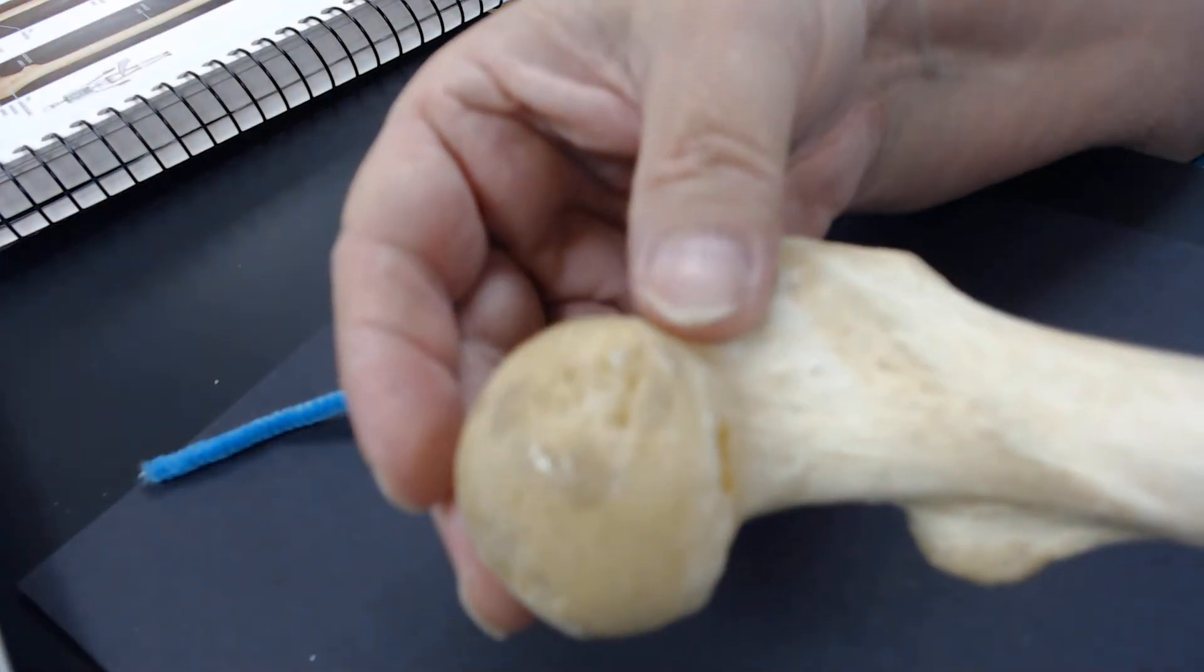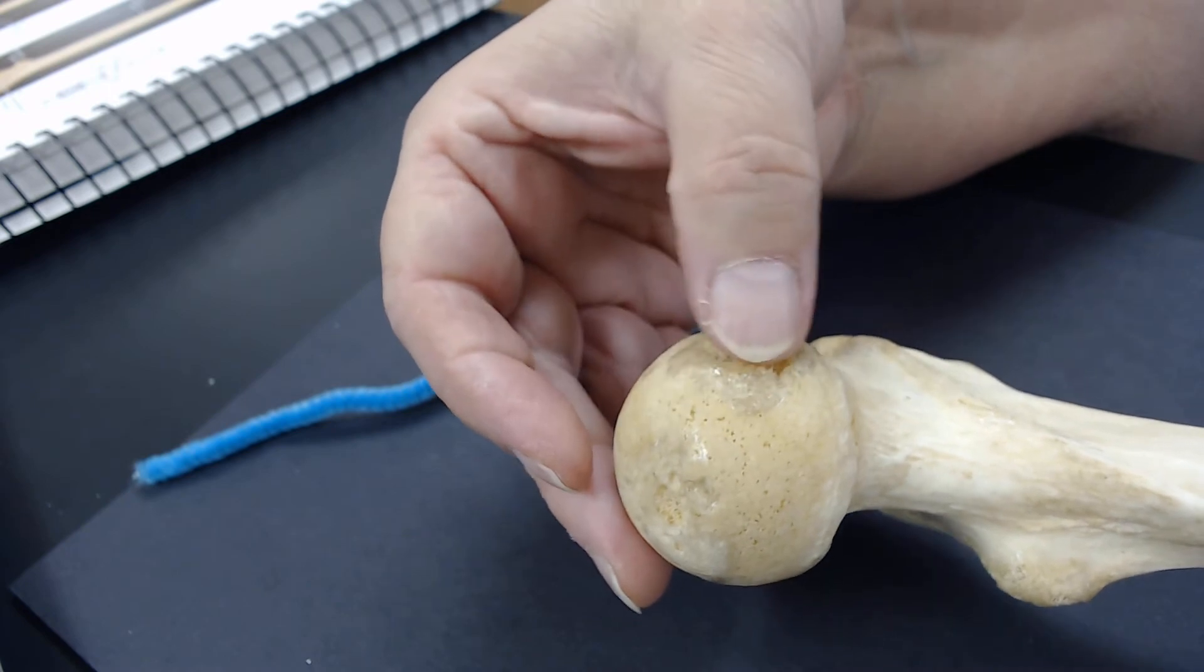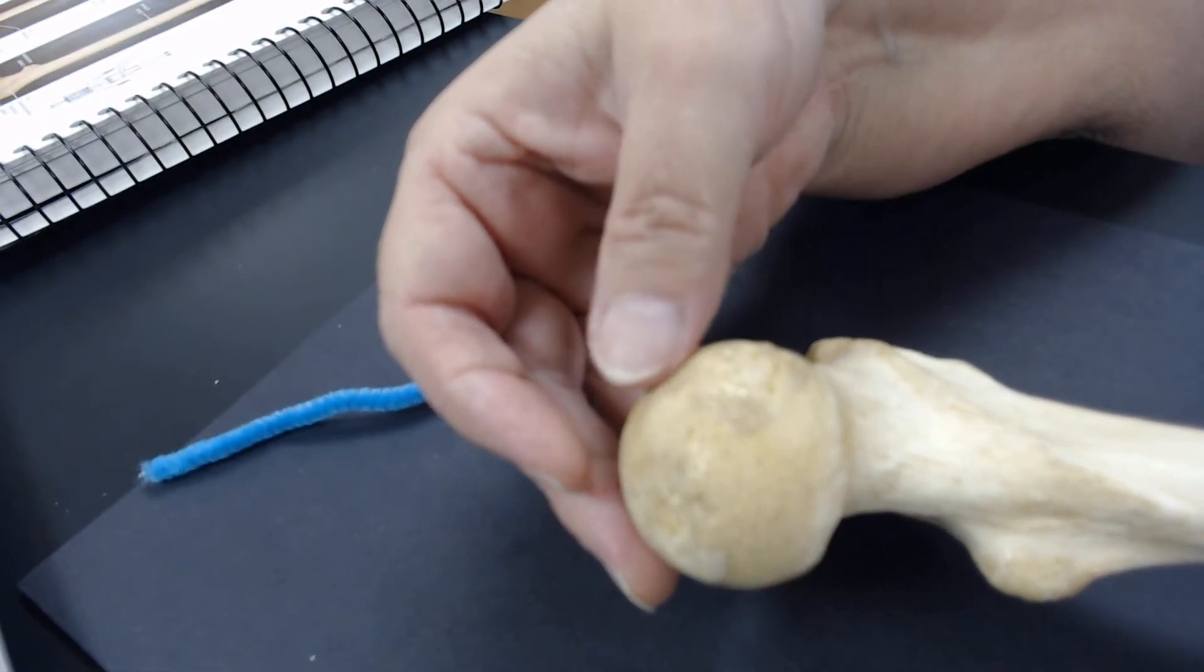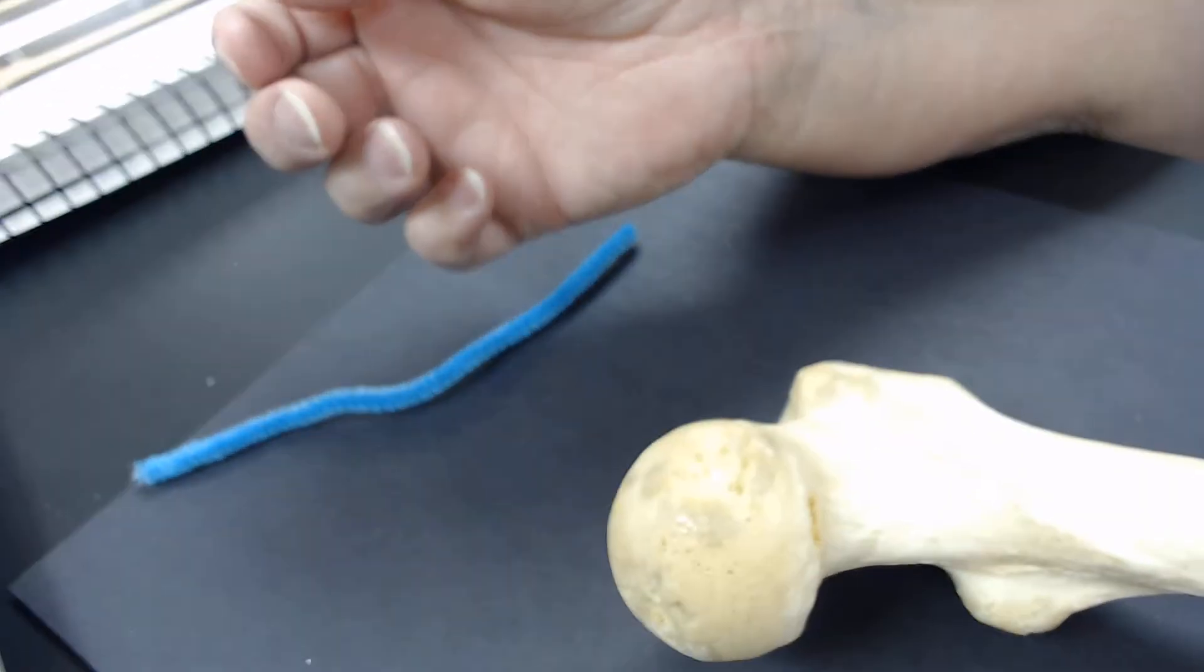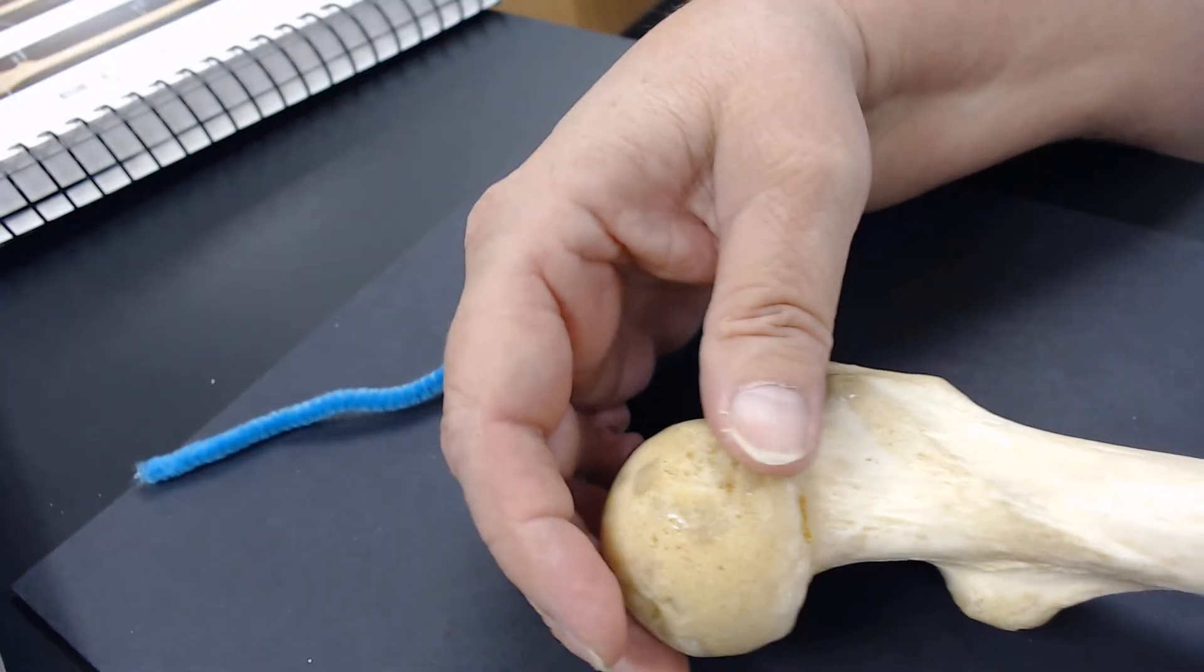While we're here, let's see if we can see that spongy bone. So, some of the surface of the bone has been damaged in this sample, and we can see the spongy bone inside there.